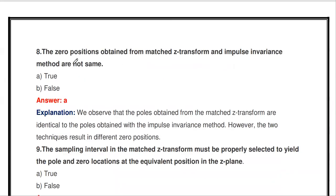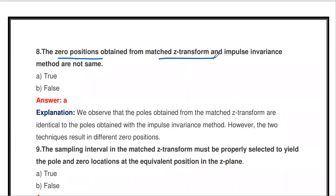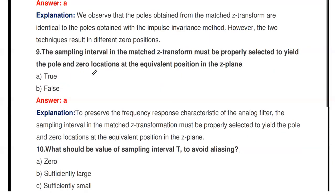The next question: the zero positions obtained from matched Z-transform and impulse invariant method are not the same — true or false? It is true. Only the poles are identical between matched Z-transform and impulse invariant method. The zero positions — the roots of the numerator polynomial — obtained from matched Z-transform are different from those of the impulse invariant method. So this is true.